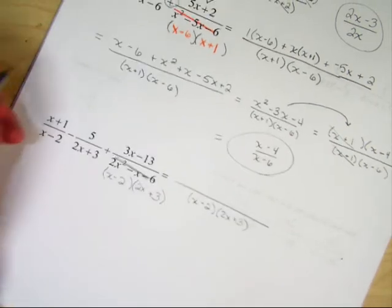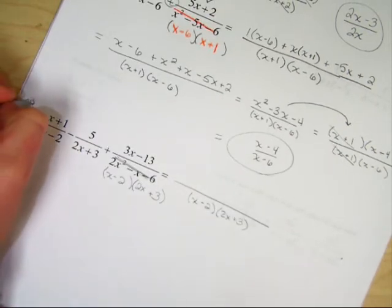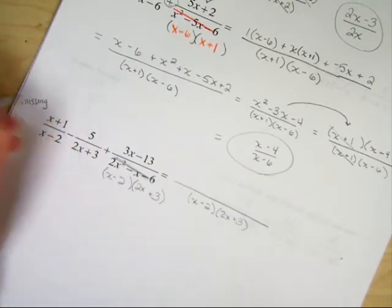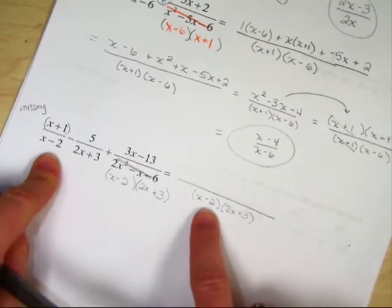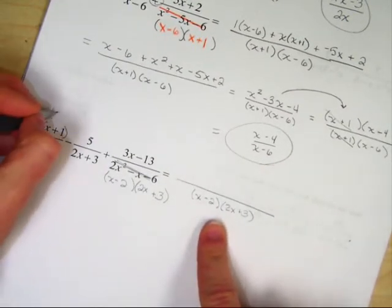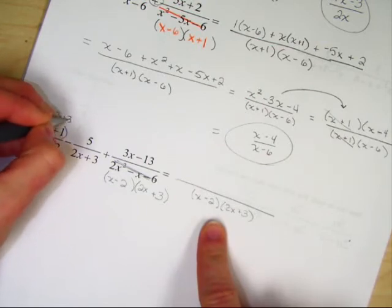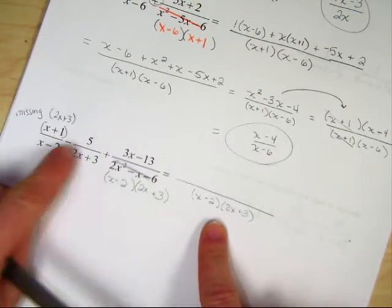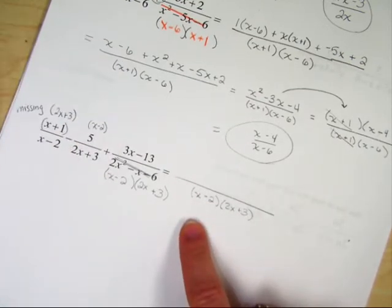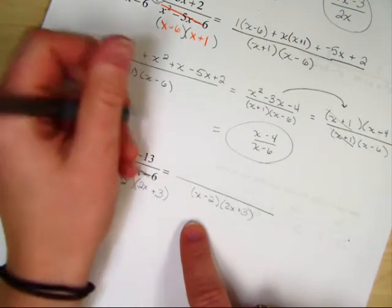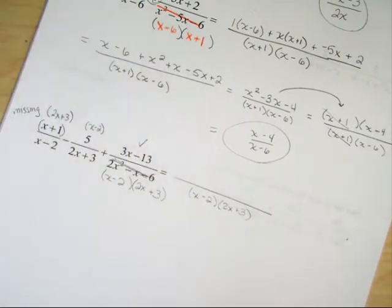Now what we need to do is we need to figure out what's missing. This x plus 1 only has an x minus 2 in the denominator, which means it needs a 2x plus a 3. This 5 is missing the x minus 2 in the denominator. And this 3x minus 13 isn't missing anything.